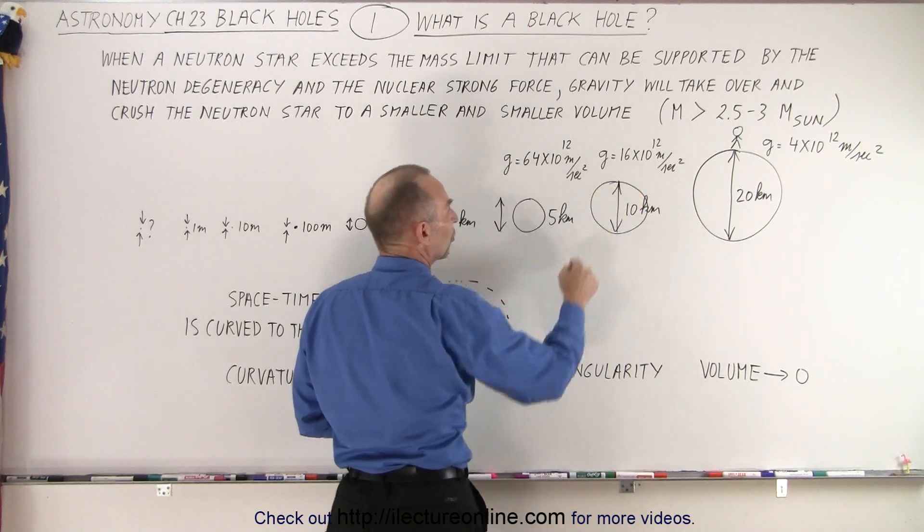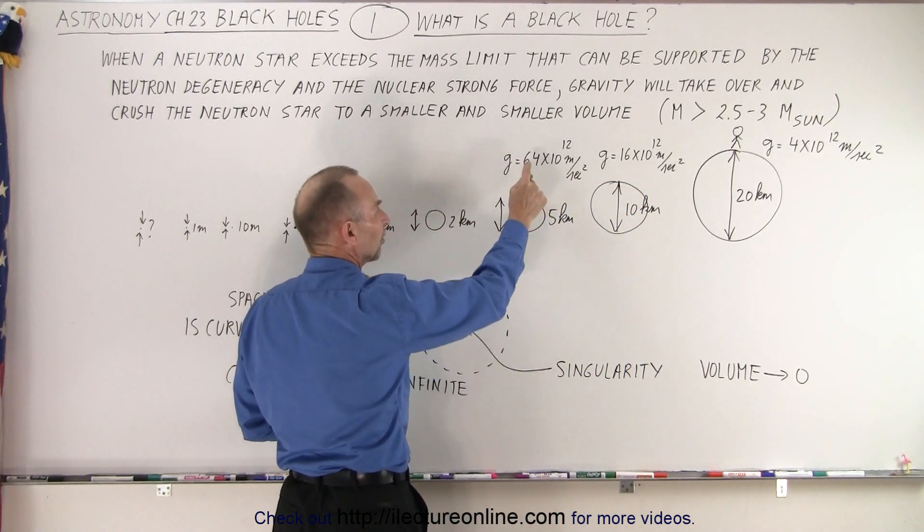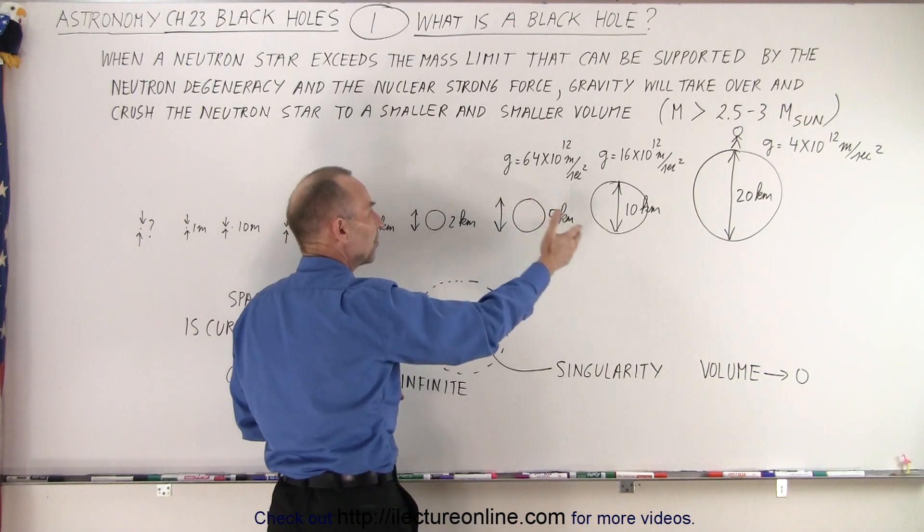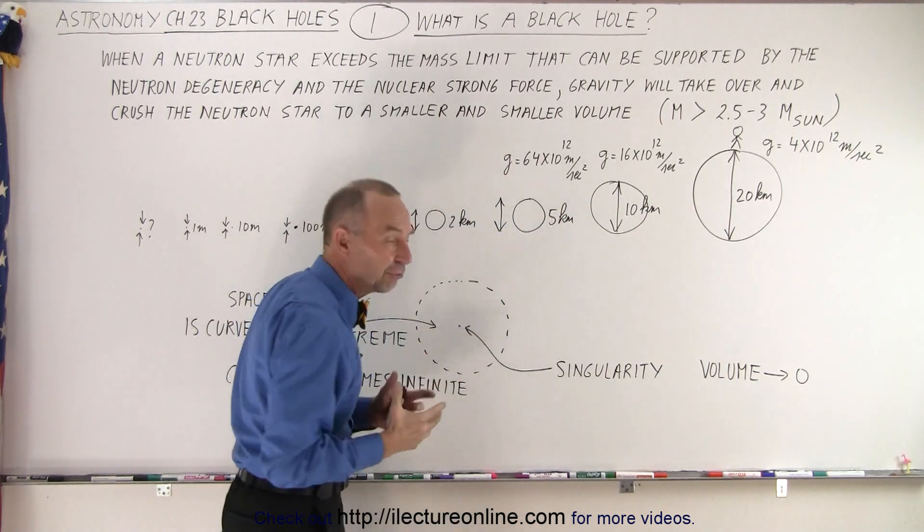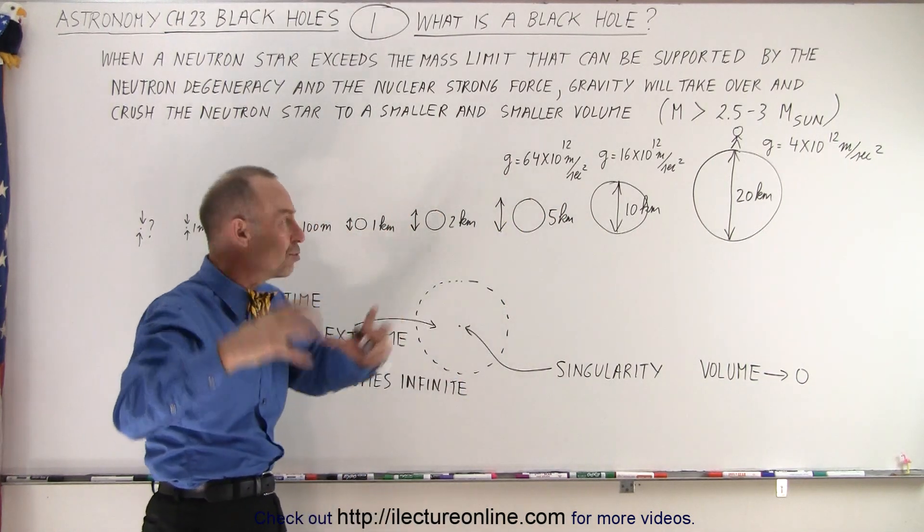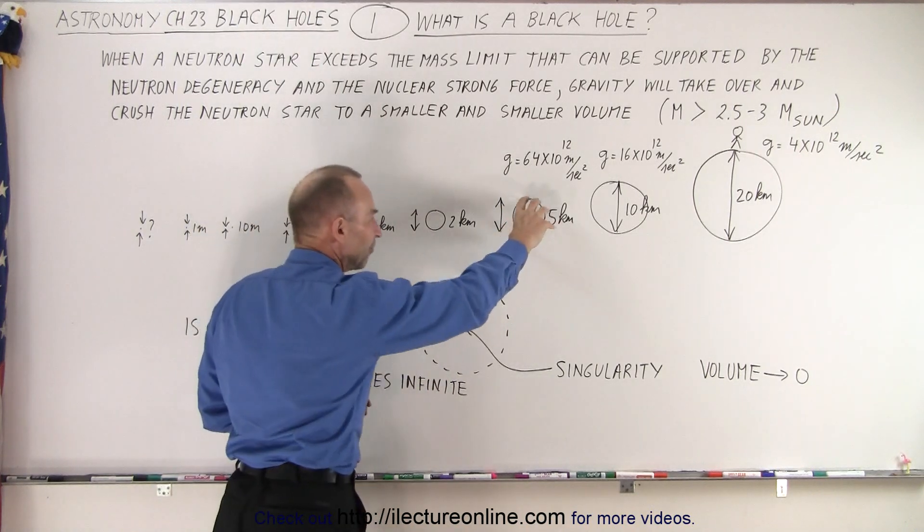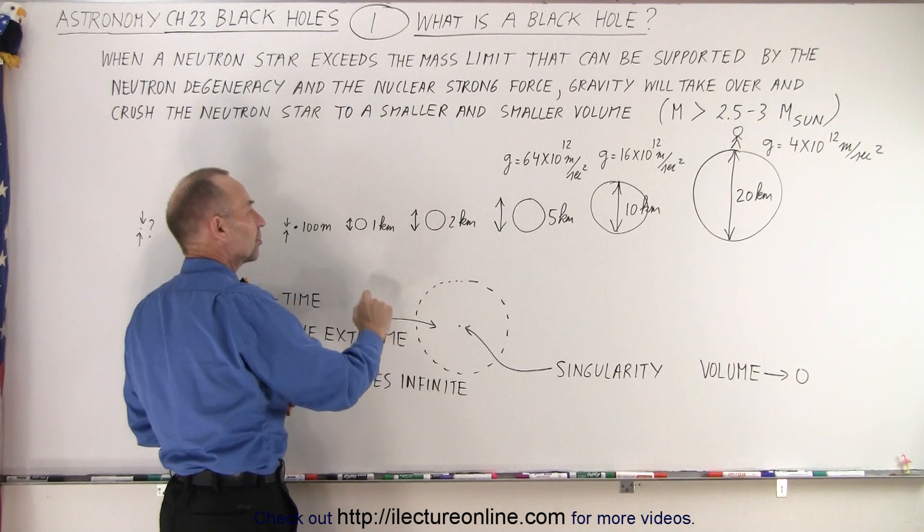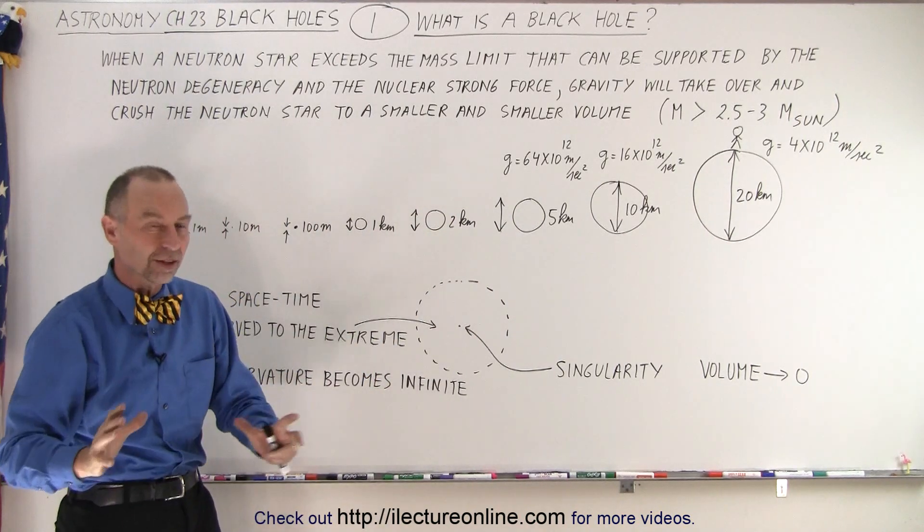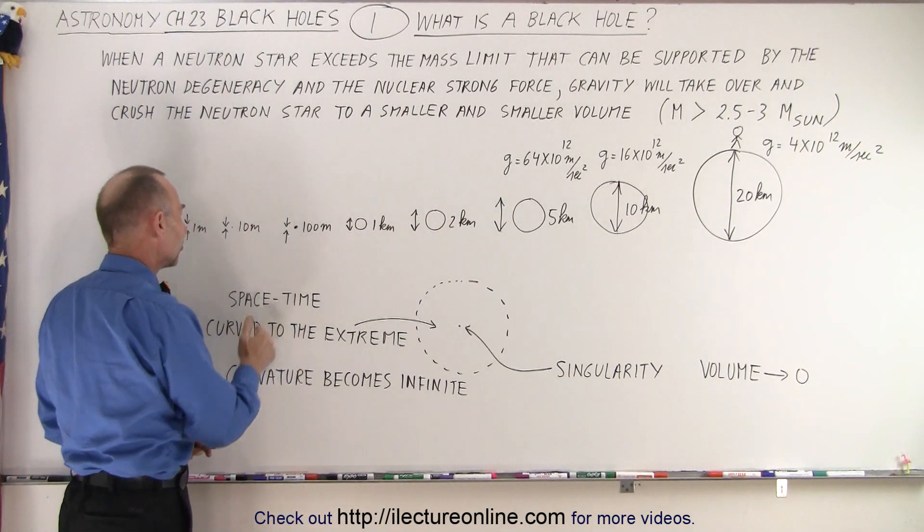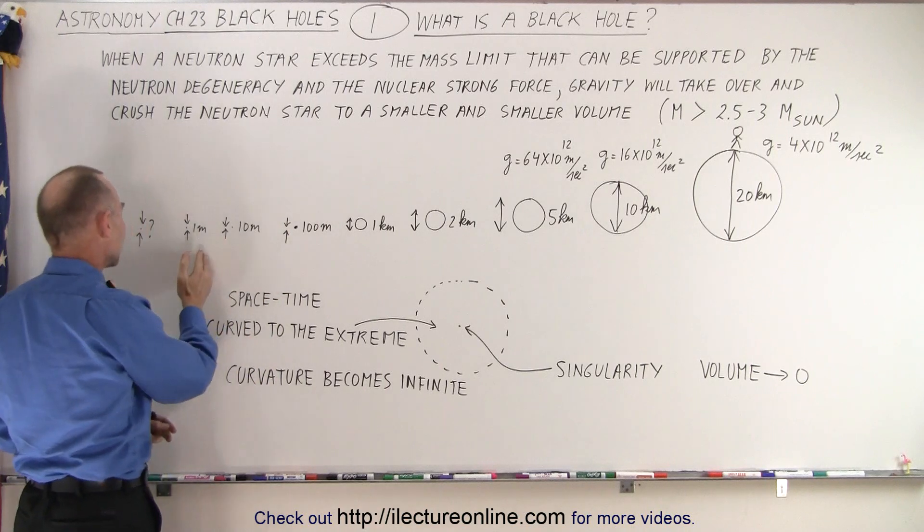So here it's 16 times 10 to the 12 meters per second squared, 64 times 10 to the 12 meters per second squared, and you can see how the force of gravity just grow enormously as the neutron star gets squished even more, down to 5 kilometers across, 2 kilometers across, 1 kilometer across, but it doesn't stop there. 100 meters across, 10 meters across, 1 meter across.